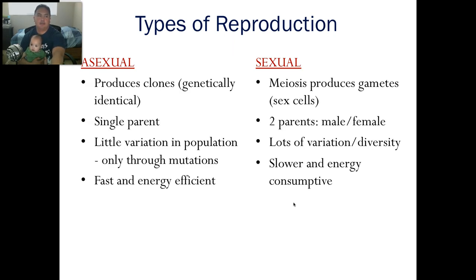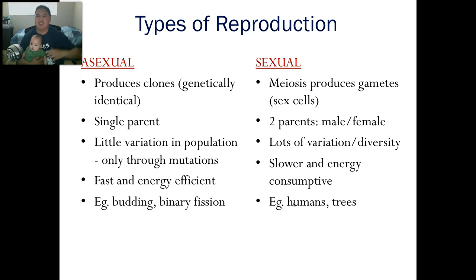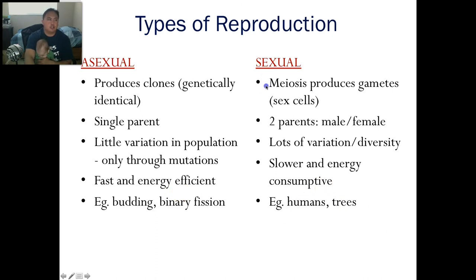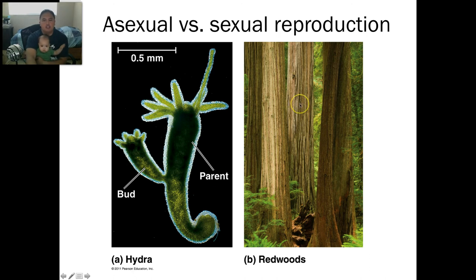Moving on to types of reproduction: asexual is just one organism reproducing itself, producing a clone. Sexual reproduction requires two parents — a male and a female — and causes a lot of diversity. Things that do asexual reproduction include budding and binary fission — bacteria, sponges, some organisms. An example is a hydra: the parent buds off a part that becomes an exact clone. Whereas redwoods and trees do sexual reproduction, needing a male and a female.